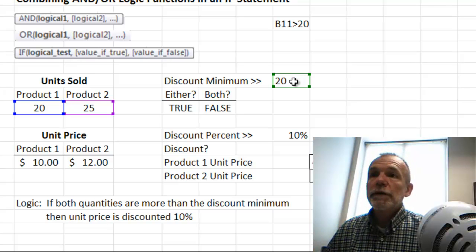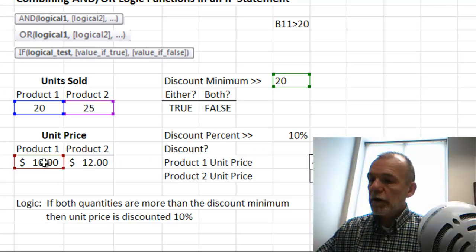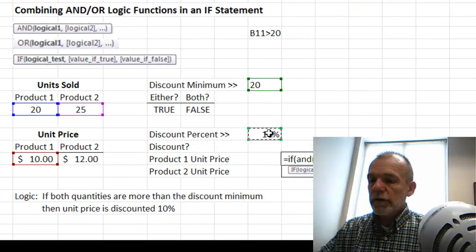If it evaluates true, then the product 1 unit price is going to be this value here, times one minus the discount.